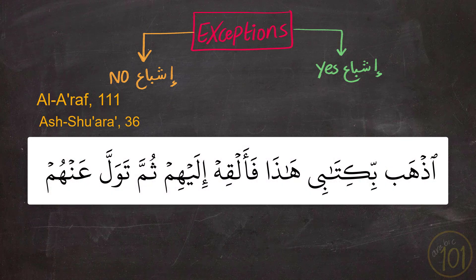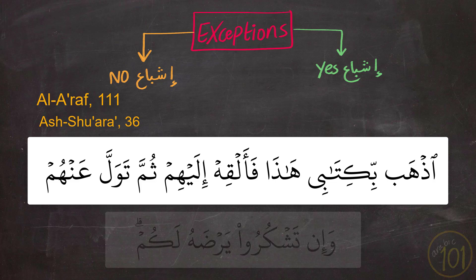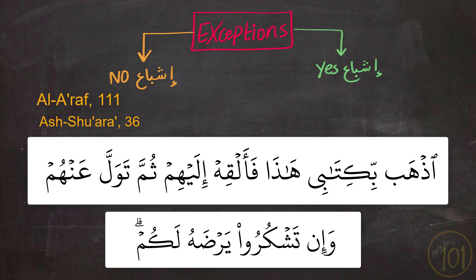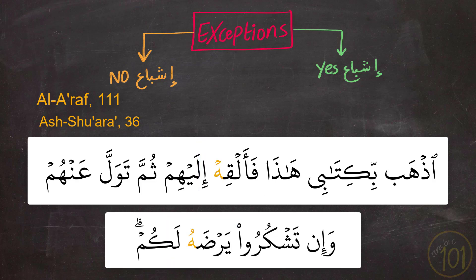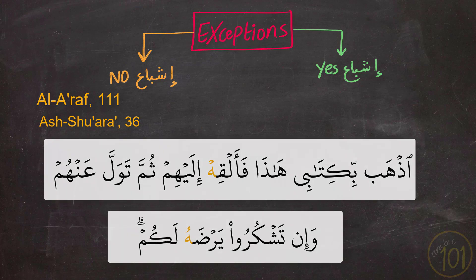Next exception: فَأَلْقِهِ إِلَيْهِمْ ثُمَّ تَوَلَّ عَنْهُمْ and وَإِن تَشْكُرُوا يَرْضَهُ لَكُمْ. In these two cases, we also see that ها is not an original part of the word, and it came between two letters that have فتحة, ضمّة, or كسرة. We kept on reading, and yet we cannot extend or add إشباع here.